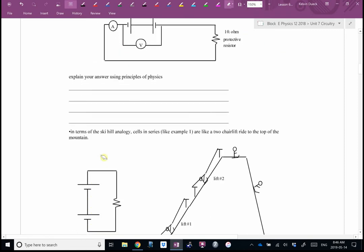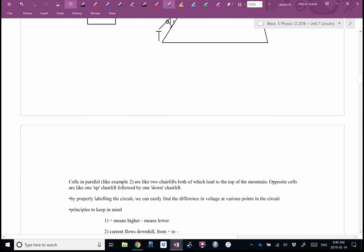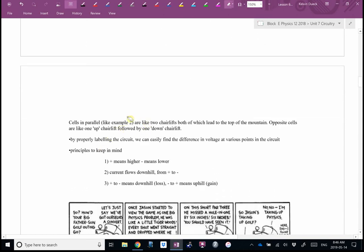So, in terms of my ski hill analogy, cells in series are like a two-chairlift ride to the top of the mountain. You get off halfway, hop on another one, get to the top. Well, cells in parallel, like example two, are like two chairlifts, both of which lead to the top of the mountain. Some people can take that chairlift. Some people can take that chairlift. You're all going to get to the 1.5 volts at the top of the mountain. Oh, and each chairlift is only covering, taking half the skiers, half the current, so the batteries will last twice as long.